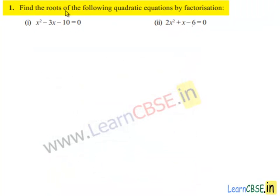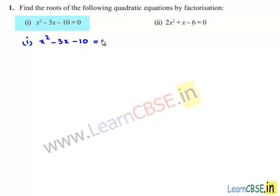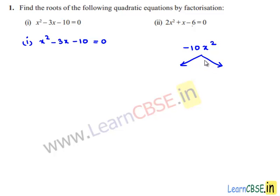Coming to the first problem: find the roots of the following quadratic equations by factorization. The first equation given is x squared minus 3x minus 10 equals 0. The product of the first term and the last term is minus 10x squared. We need to find factors of minus 10x squared such that their sum is minus 3x.